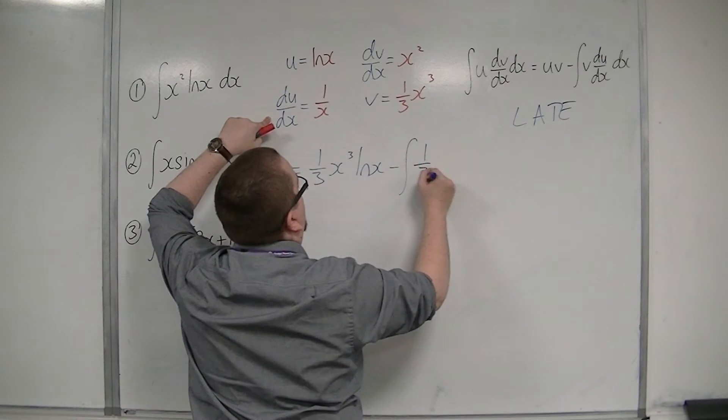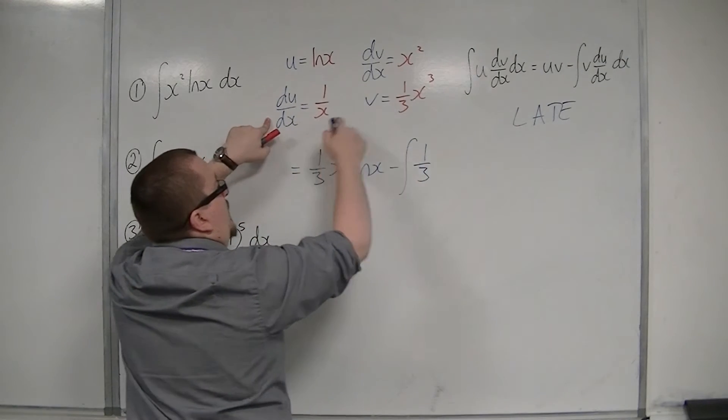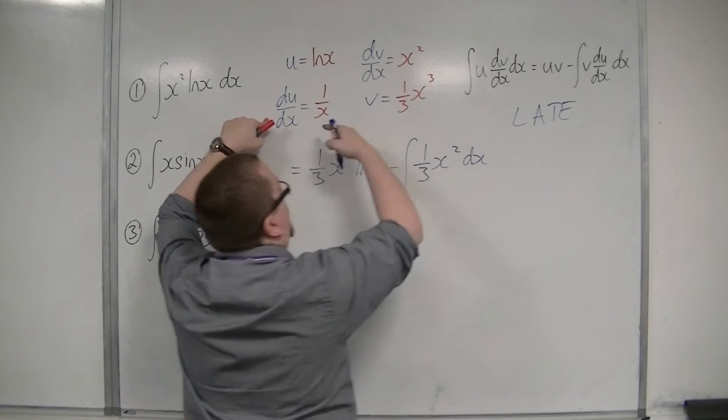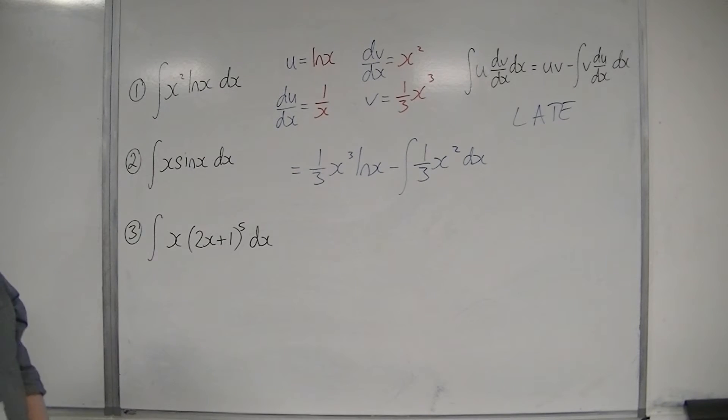So 1 third x squared times 1 over x is x squared. Or x cubed times 1 over x, sorry, x squared.